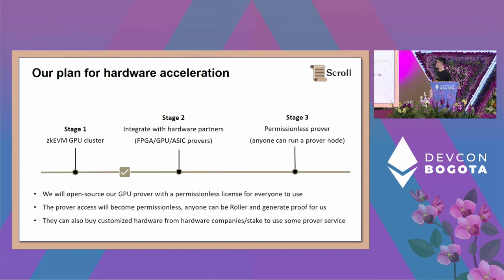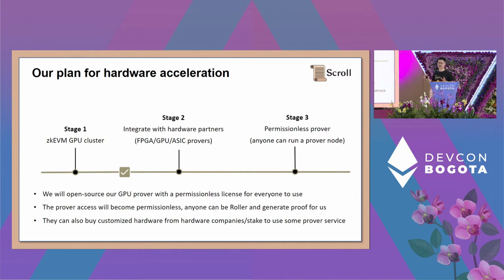In stage three, we finally move to a permissionless prover — what I call layer two proof outsourcing — where external parties run the prover. We will open-source our GPU prover with a permissionless license for everyone to use. Even now, our CPU prover is totally open source — you can already run it if you want. The GPU prover is still being improved and will be open-sourced later. Anyone will be able to run our prover software permissionlessly, generate proofs at home, buy customized hardware from those companies, or use proof-as-a-service providers.